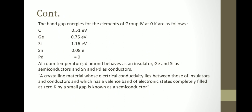The band gap energies for group 4 elements at zero Kelvin are: carbon 0.51 eV, germanium 0.75 eV, silicon 1.16 eV, and platinum 0 eV. At room temperature, diamond behaves as an insulator, while germanium and silicon behave as semiconductors.